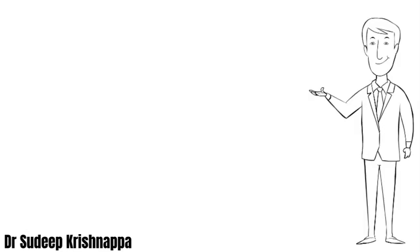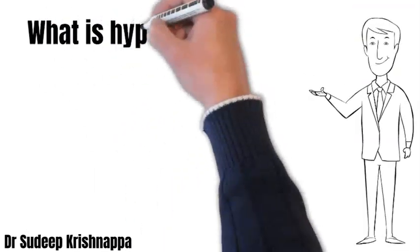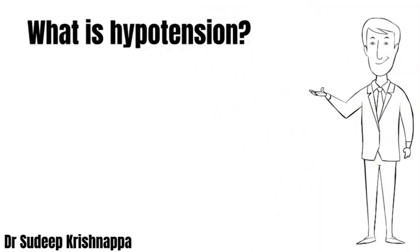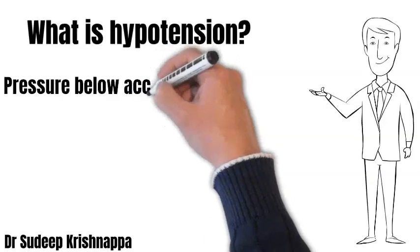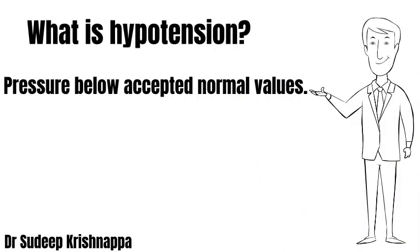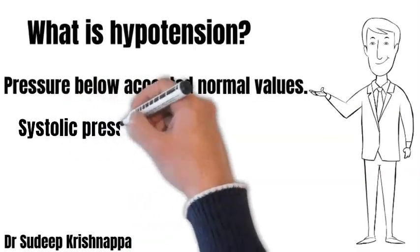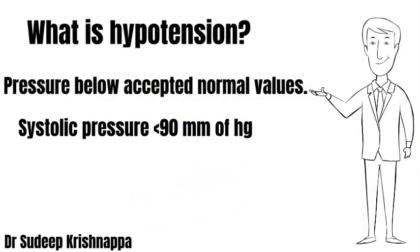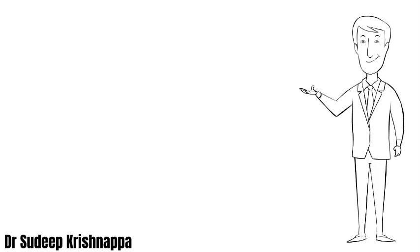Any blood pressure below the normal accepted value for a given person can be considered hypotension. However, in general, any systolic blood pressure below 90 mmHg is what is defined as hypotension. In a hypotensive patient, once we identify whether it's a problem with cardiac output or vascular resistance, we can initiate appropriate treatment.